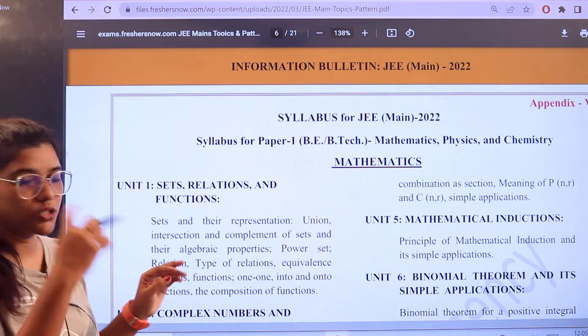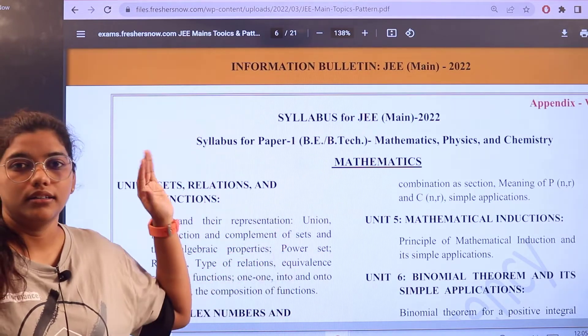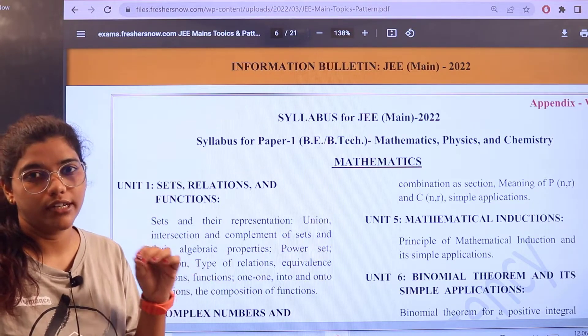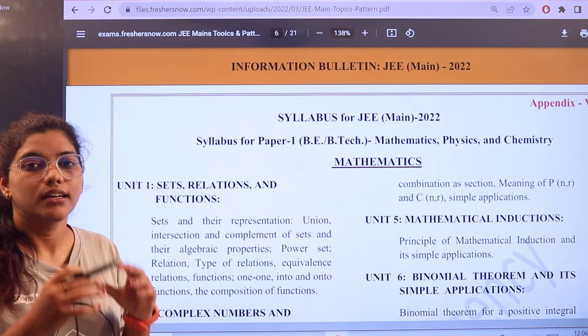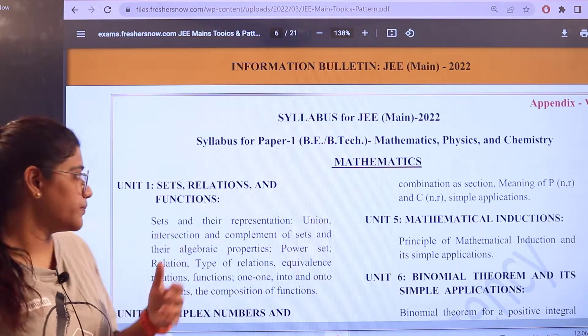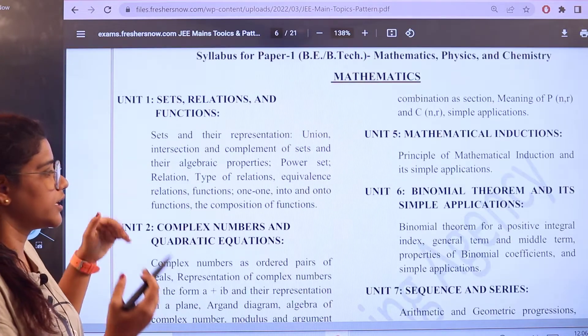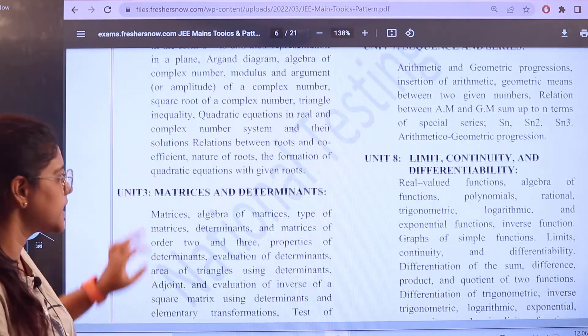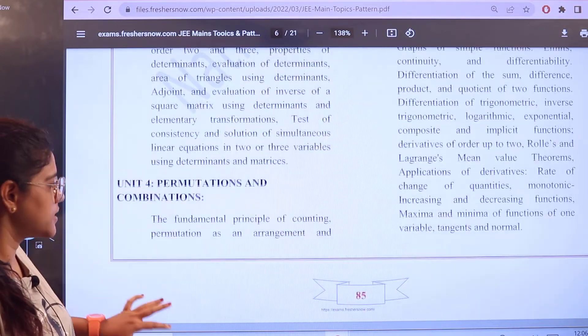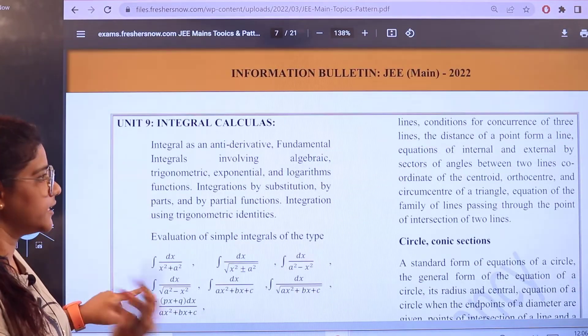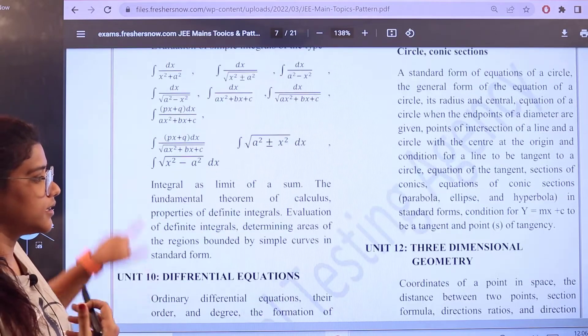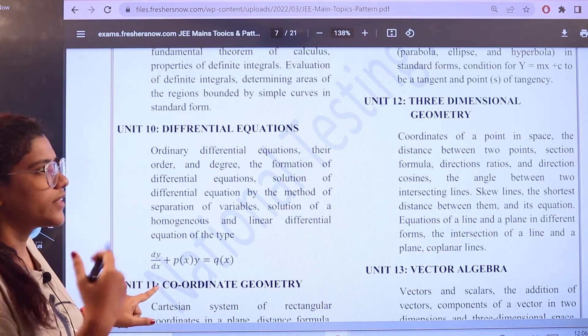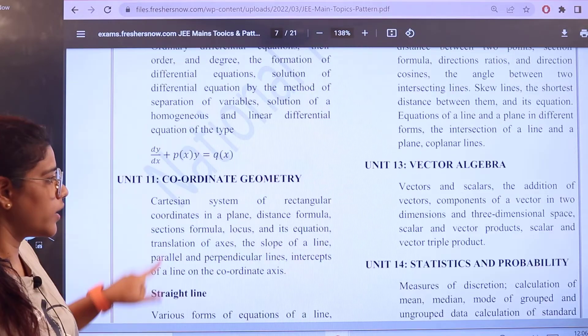So this is how the unit division is placed. Under each unit you would be having different sections as well or different topics, so you can conveniently read them. Unit 1 you have Sets, Relations and Functions, then you have Complex Numbers and Quadratic Equations, Binomial Theorem, Sequences and Series, Matrices and Determinants, and you have Permutations and Combinations, then Integral Calculus, Circles and further other sections, Differential Equations, then you have Three Dimensional Geometry, Coordinate Geometry, Vector Algebra, Statistics, etc.